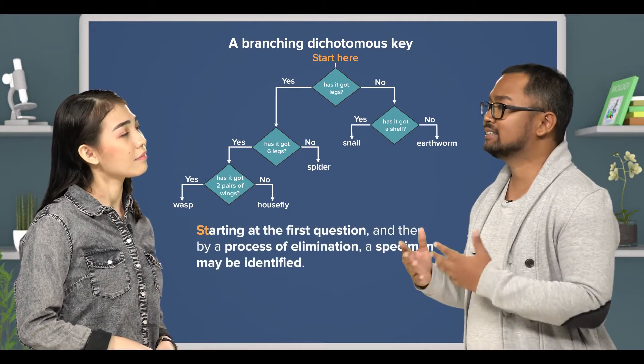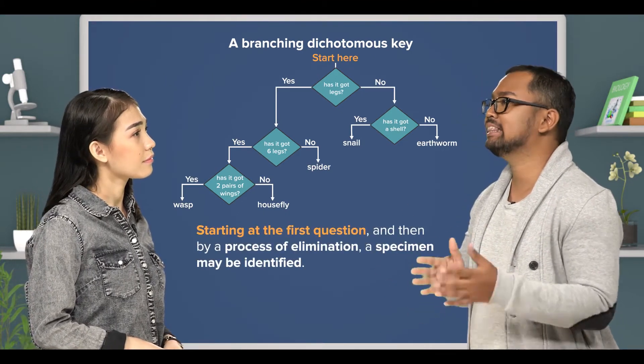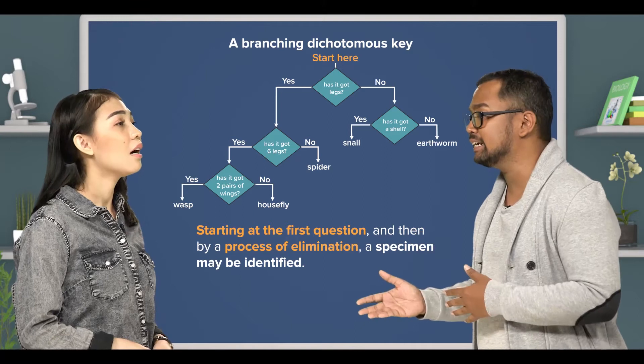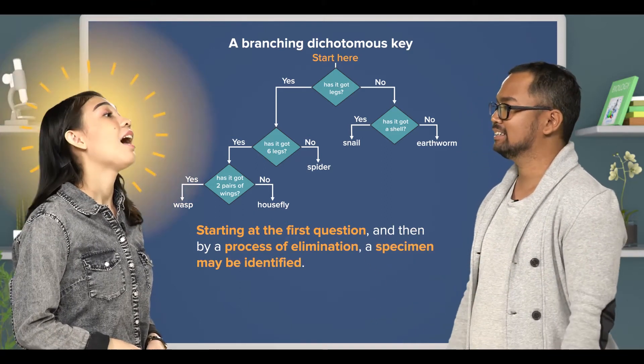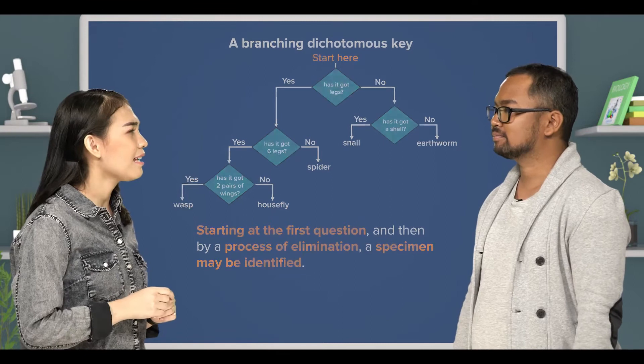Thus, by starting at the first question, and then by a process of elimination, a specimen may be identified. Oh, that sounds amazing. Please show me how it works.